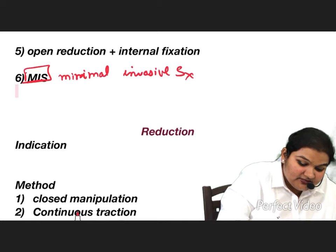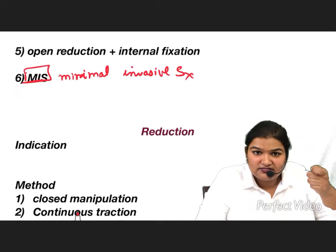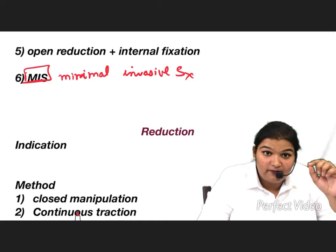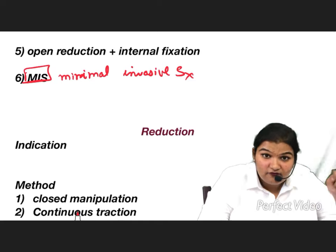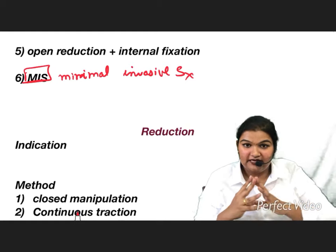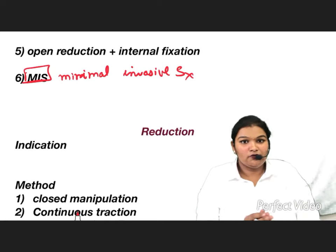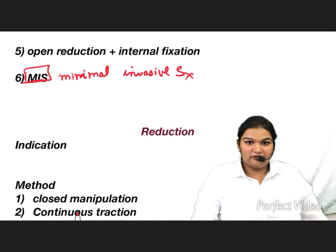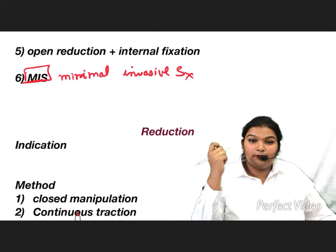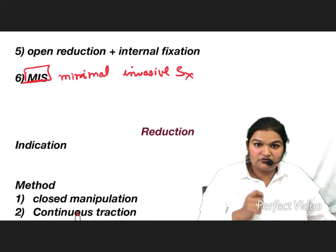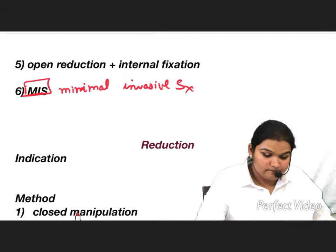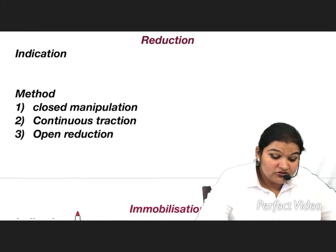MIS — Minimally Invasive Surgery — involves small cuts of 3 to 4 mm to insert wires or screws and stabilize the fracture. You perform closed reduction non-surgically, then make a small incision to place wires or screws to fix the bone. These are the other methods for treatment of fractures.